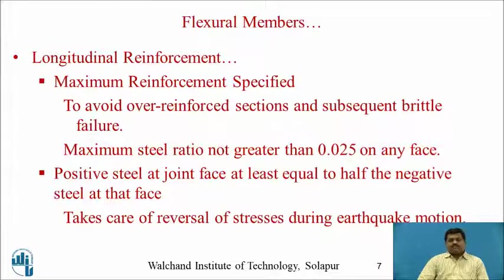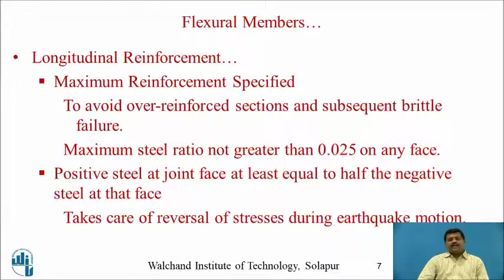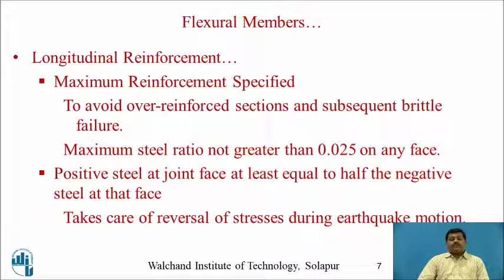To avoid an over-reinforced section and its associated brittle failure — where the section does not yield and fails due to compressive stress — the maximum steel ratio must not be greater than 2.5 percent at any face. This is the maximum reinforcement allowed in the section.